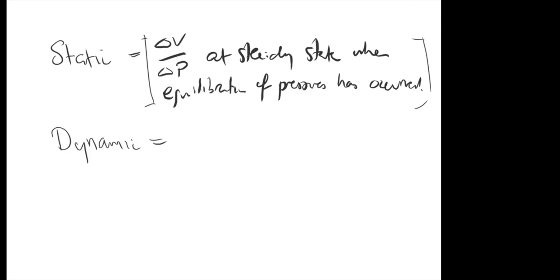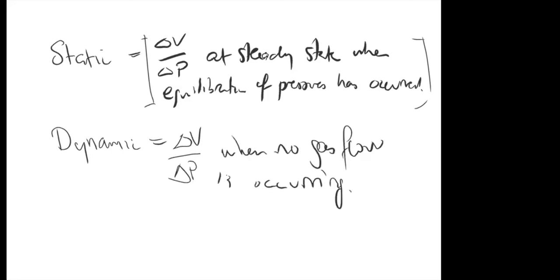Static compliance is the total compliance when all alveoli are at equilibrium with the atmosphere, in the absence of airflow. Dynamic compliance is the instantaneous total compliance measured during the respiratory cycle — essentially the change in volume for change in pressure at end-inspiratory and end-expiratory points, when no gas flow is occurring.